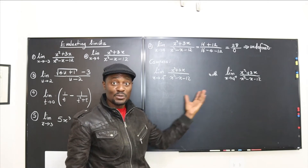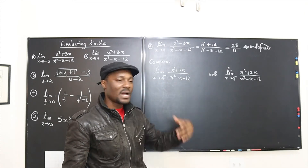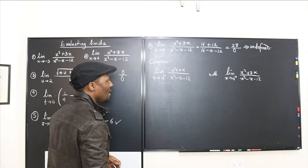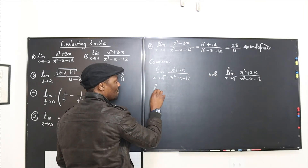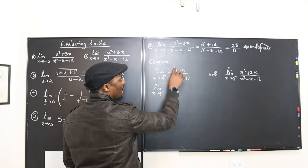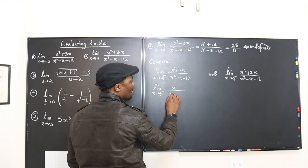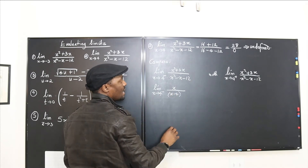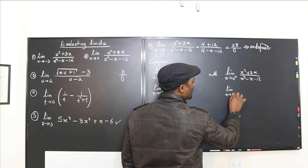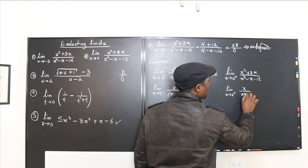If we reduce this expression — and we can, since we factored it in the previous example — when simplified it becomes x over (x minus 4). So we compare the limit as x goes to 4 from the left of x over (x minus 4) with the limit as x goes to 4 from the right of x over (x minus 4).